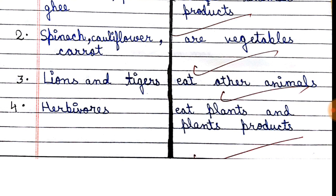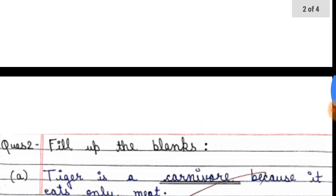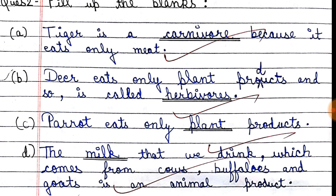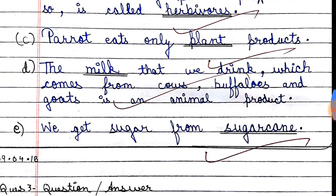Herbivores eat plants and plant products. Next, tiger is a carnivore because it eats only meat. Deer eats only plant products and so is called a herbivore. Parrot eats only plant products, so it is also a herbivore.